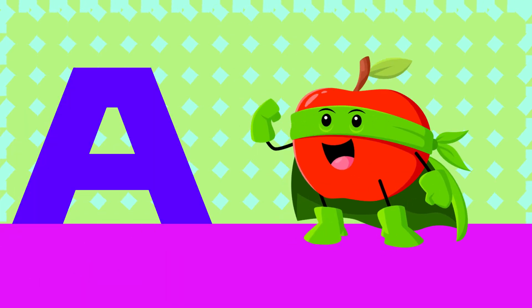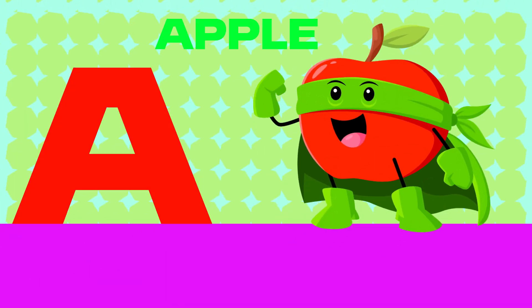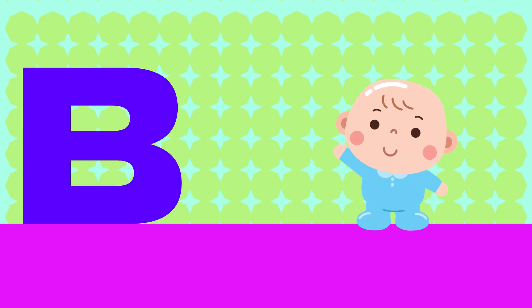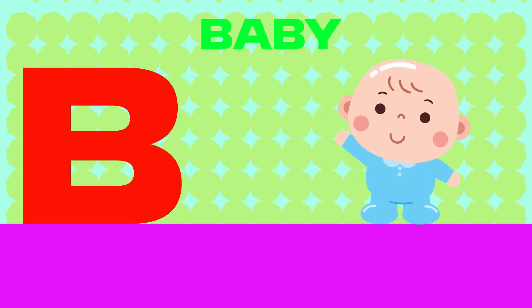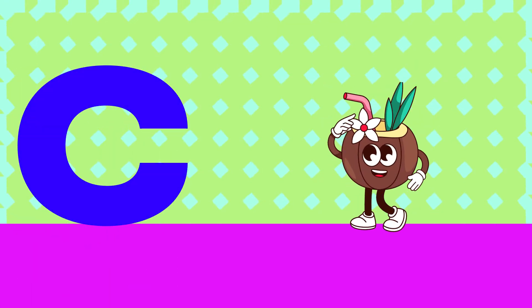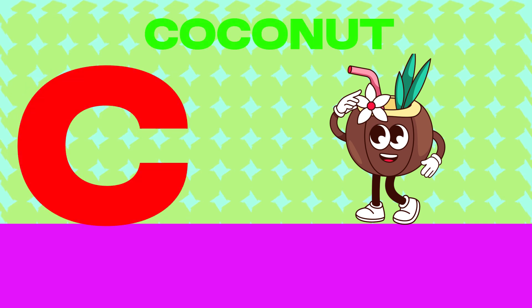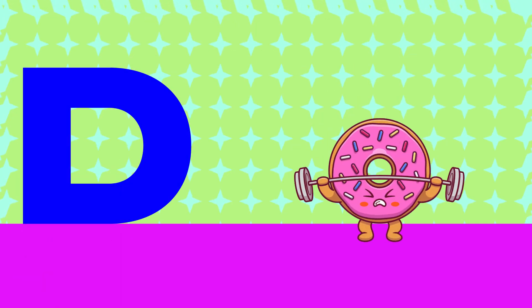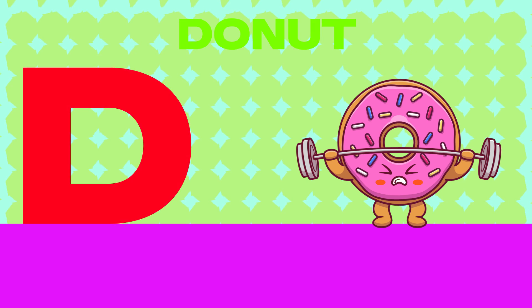A is for Apple. A, A. Apple. B is for Baby. Ba, Ba. Baby. C is for Coconut. Ga, Ga. Coconut. D is for Donut. Da, Da. Donut.